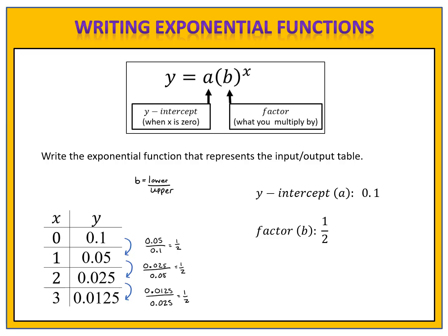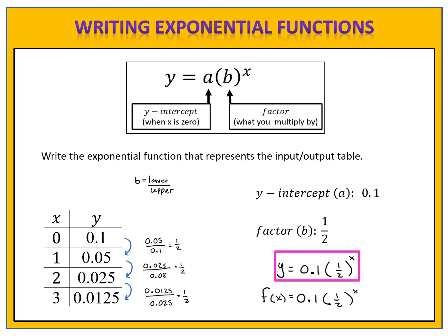We're now ready to write the equation. y equals a times b to the x power becomes y equals 0.1 times 1 half to the x power. And of course, if you choose, you could write the function using function notation.